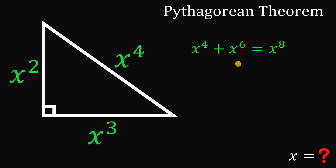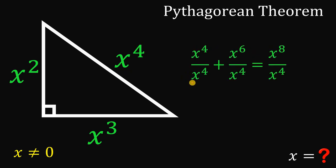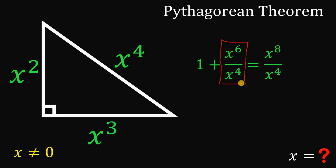Take note that x cannot equal 0, because if x equals 0, all sides of the triangle would be 0. So x is not equal to 0, which means we can divide all terms by x raised to the fourth power. This gives us: 1 plus x squared equals x raised to the fourth power.